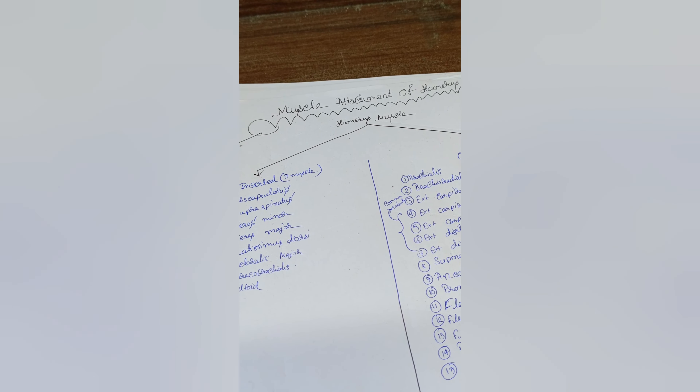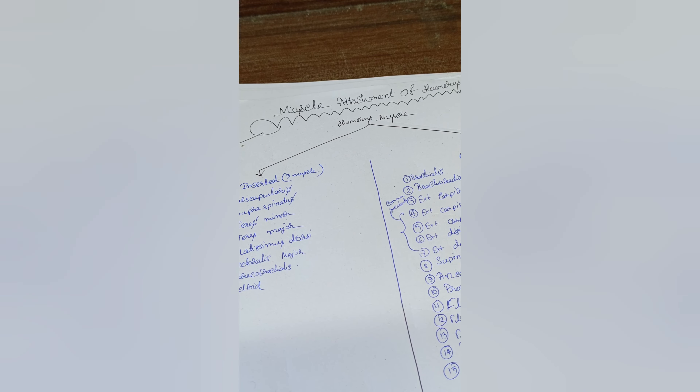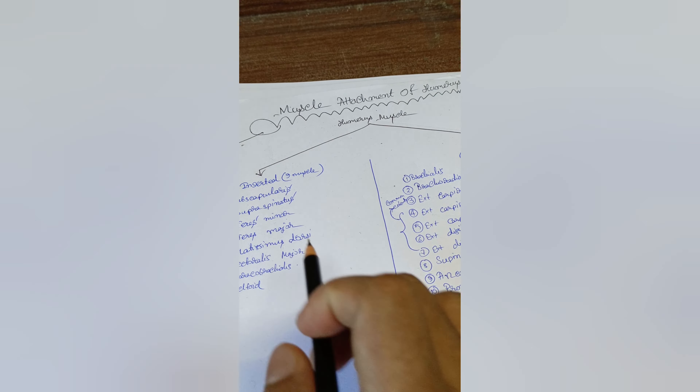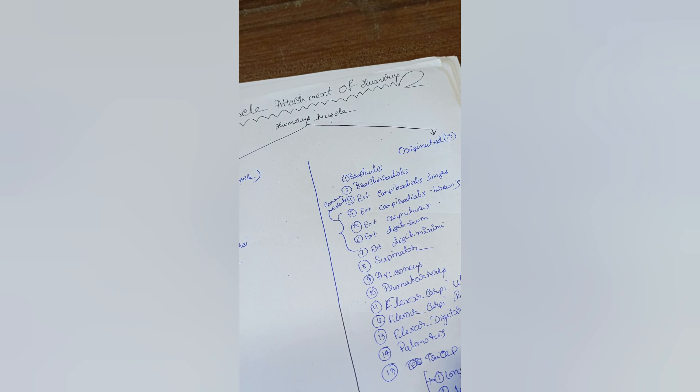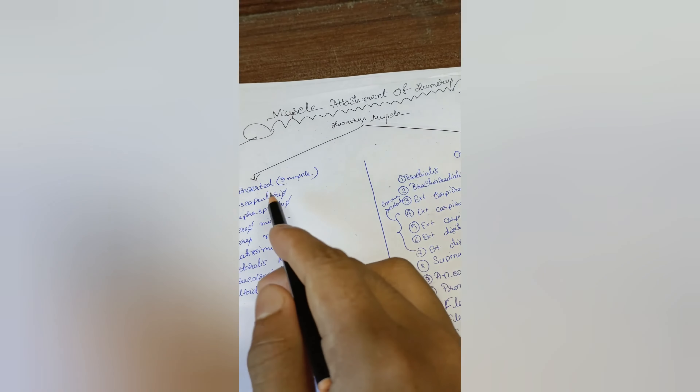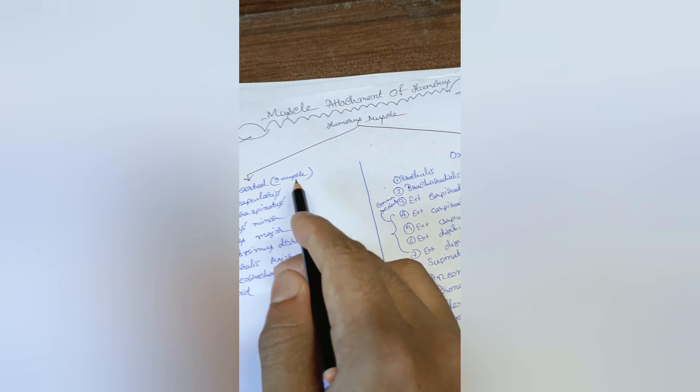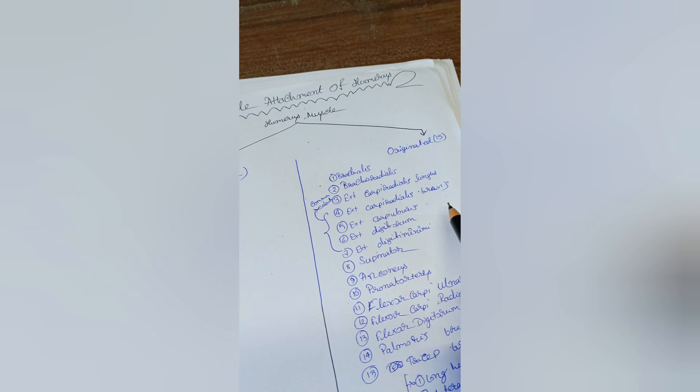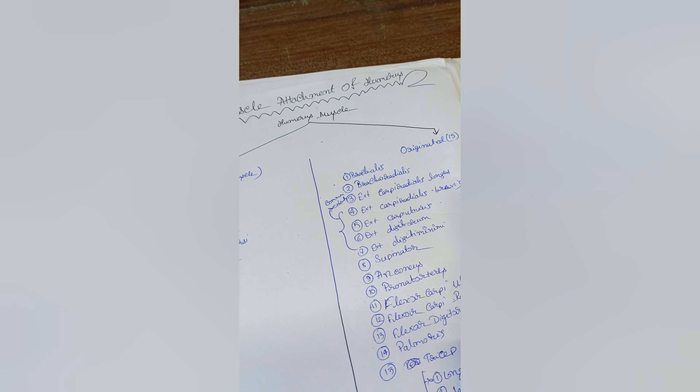Humerus muscles we have divided into two types: insert muscles and originated muscles. Insert muscles have 8 muscles and originated muscles have 15 muscles.